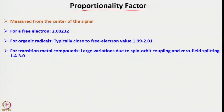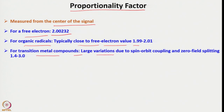The proportionality constant G is measured from the center of the signal. For a free electron, G equals 2.00232. For organic radicals it is typically close to the free electron value, between 1.99 and 2.01. For transition metal compounds, large variations are observed due to spin-orbit coupling and zero-field splitting, with G ranging from 1.4 to 3.0.